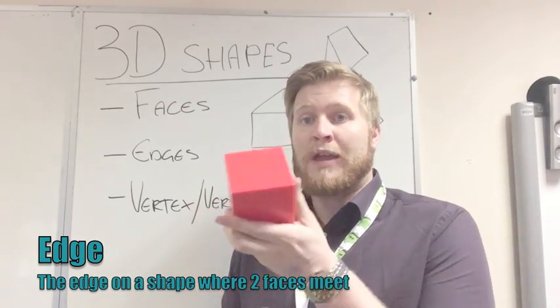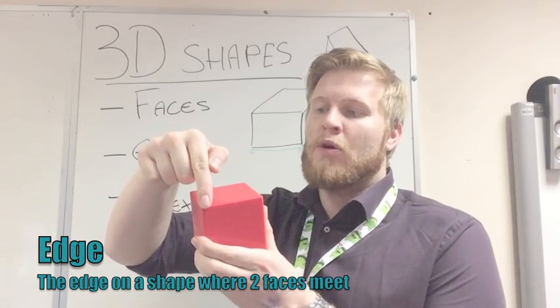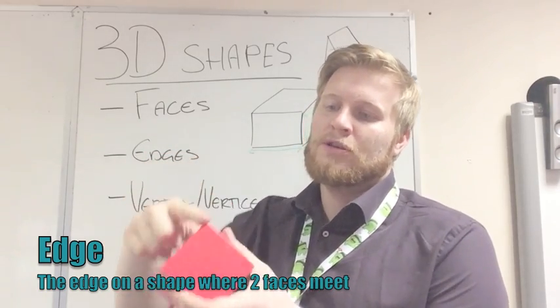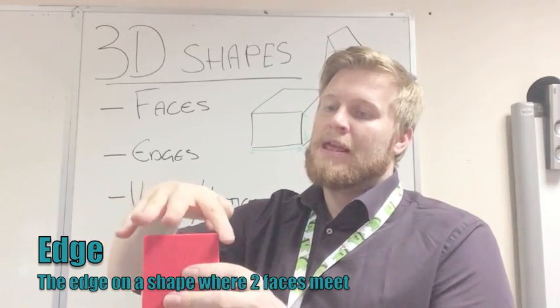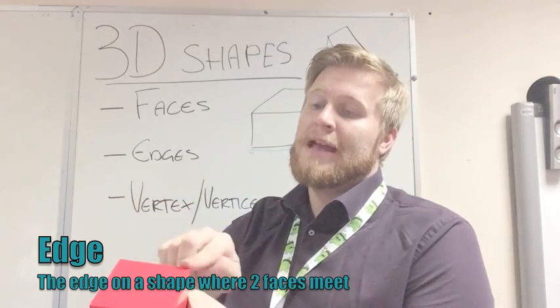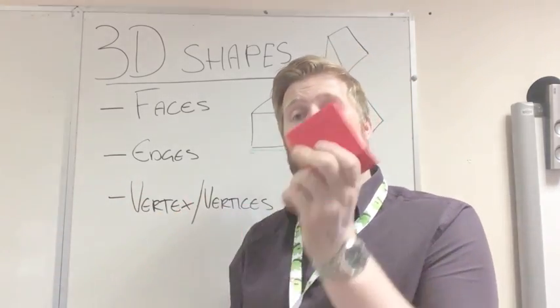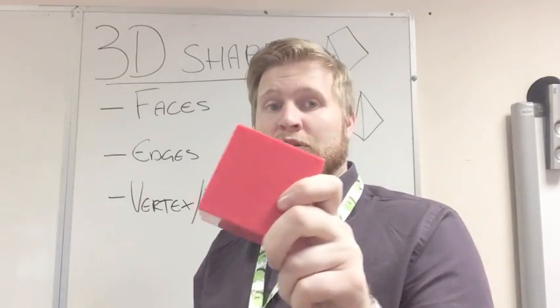When we're counting them, we'd have to count: one edge, two edge, three edge, four edge, five edge, six, seven, eight, nine, ten, eleven, twelve. And we know the cube has twelve edges.